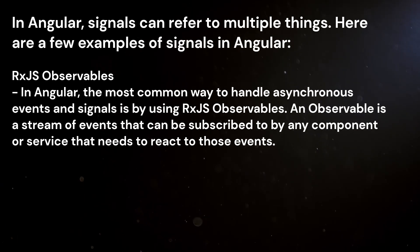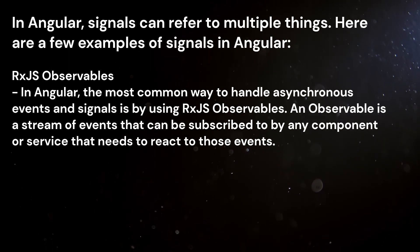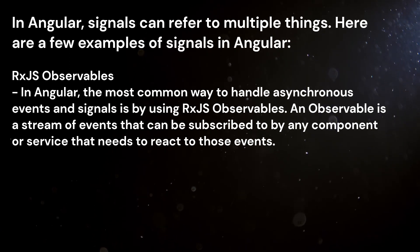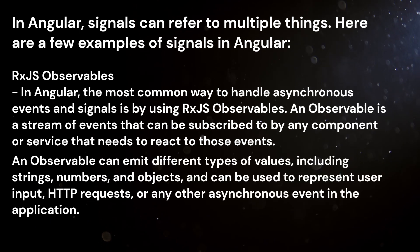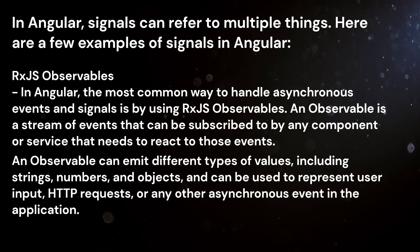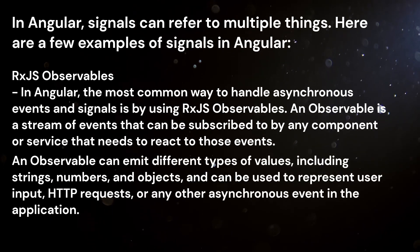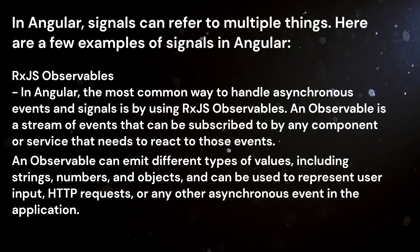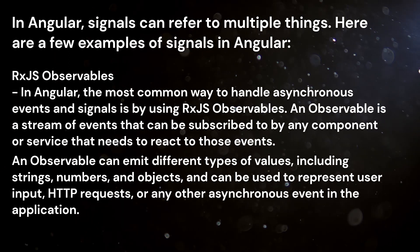RxJS observables in Angular — the most common way to handle asynchronous events and signals is by using RxJS observables. An observable is a stream of events that can be subscribed to by any component or service that needs to react to those events.